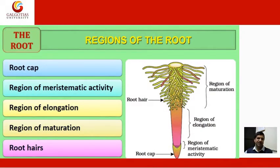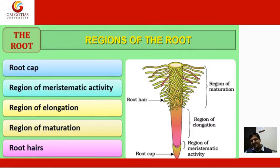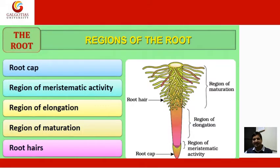Regions of the root: root cap, region of meristematic activity, region of elongation, and region of maturation. If you will see the image, I have clearly labeled where you can see the region of maturation, root hairs, region of elongation, region of meristematic activity, and root cap. Through this picture you will easily understand the morphology of the root.